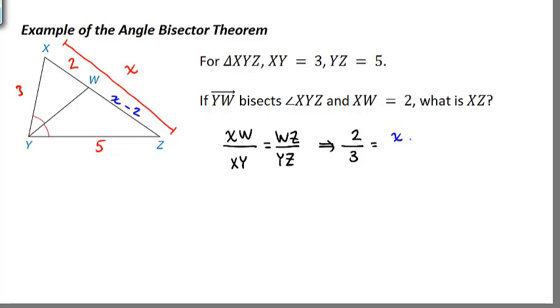And then YZ we know is just 5. Now we can use our means-extremes theorem to cross multiply. Add 6 to both sides, so 3X equals 16. X equals 16/3. There's our Angle Bisector Theorem.